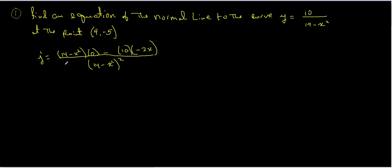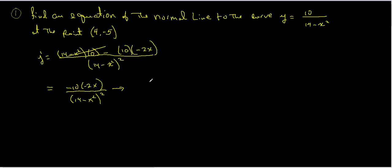If we simplify, the first term goes away, and we end up with negative 10 times negative 2x, all over 14 minus x squared, squared. Multiplying it out gives us positive 20x divided by 14 minus x squared, squared.